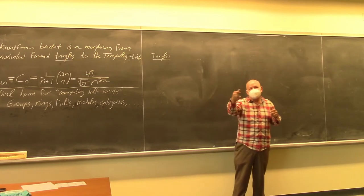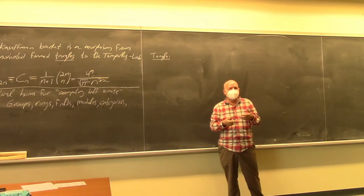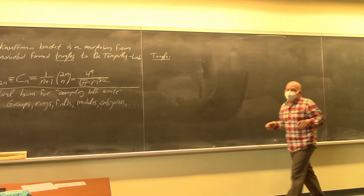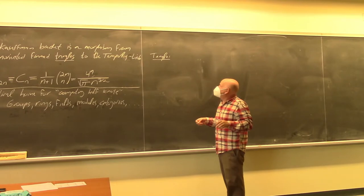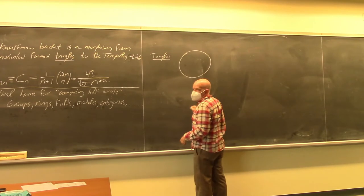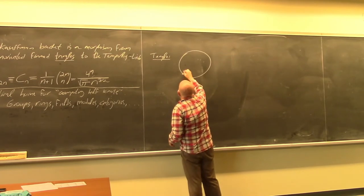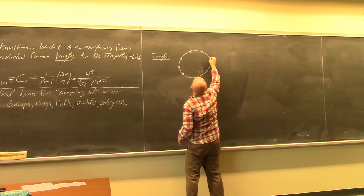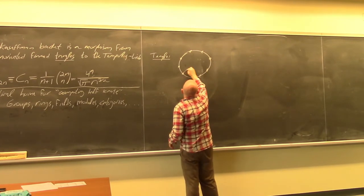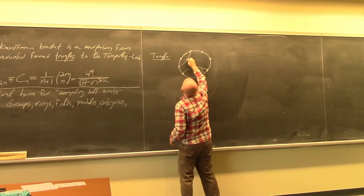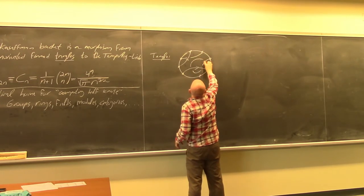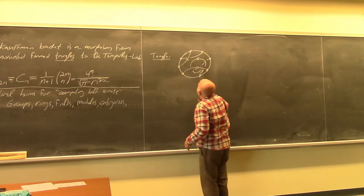That reminds me of an old joke — what's worse than a worm in an apple? Half a worm in half an apple. Anyway — what's a tangle? Instead of working in the plane you work in a disk, you fix the endpoints so they cannot move, there has to be an even number of them, and in between you have strands which can be knotted like in ordinary knot theory.